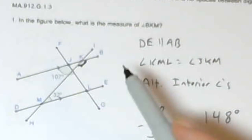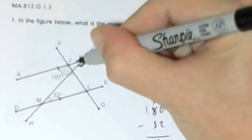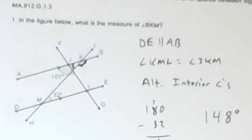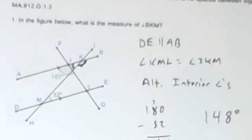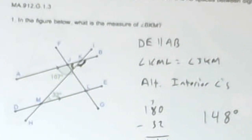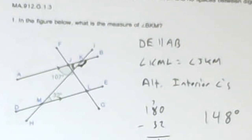Now that I've solved for JKM, which is this one right here, JKM and BKM form a linear pair, so they are supplementary — they add up to 180 degrees. So what I do is take 180 degrees and subtract 32 from that, and I get my answer: 148 degrees. That is number one.